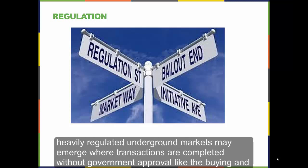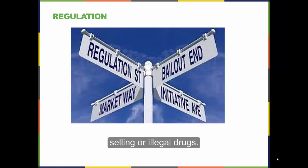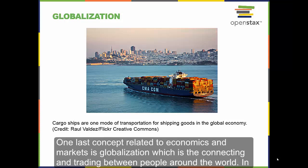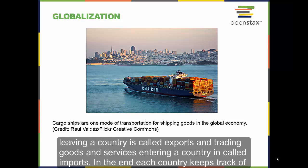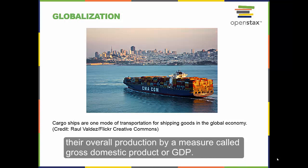In economies that are heavily regulated, underground markets may emerge where transactions are completed without government approval, like the buying and selling of illegal drugs. One last concept related to economics and markets is globalization, which is the connecting and trading between people around the world. In economic terms, globalization has been the source of international trade and financial transactions. The trading of goods and services leaving a country is called exports, and goods and services entering a country is called imports. In the end, each country keeps track of their overall production by a measure called gross domestic product, or GDP.